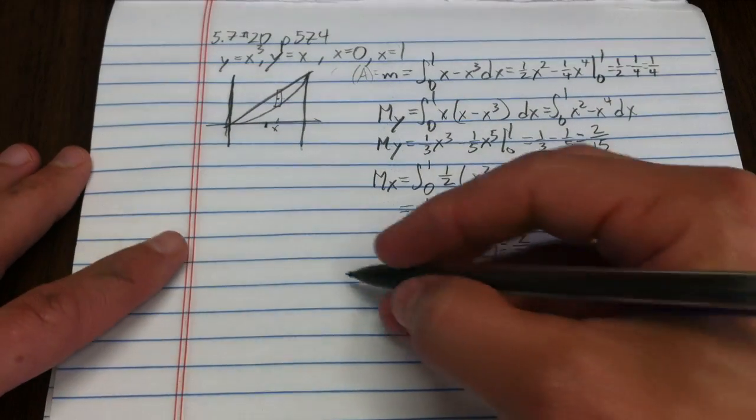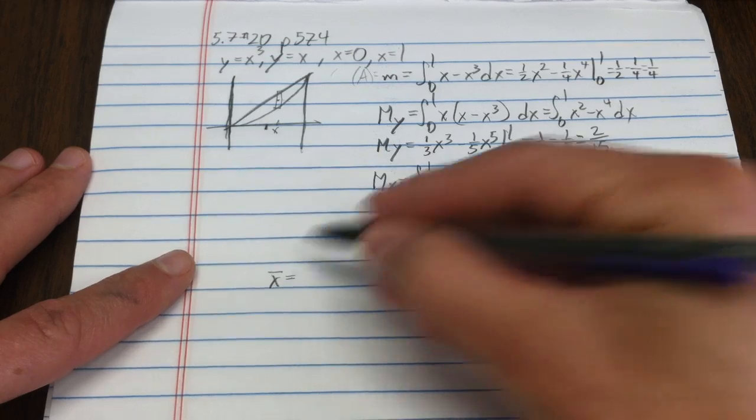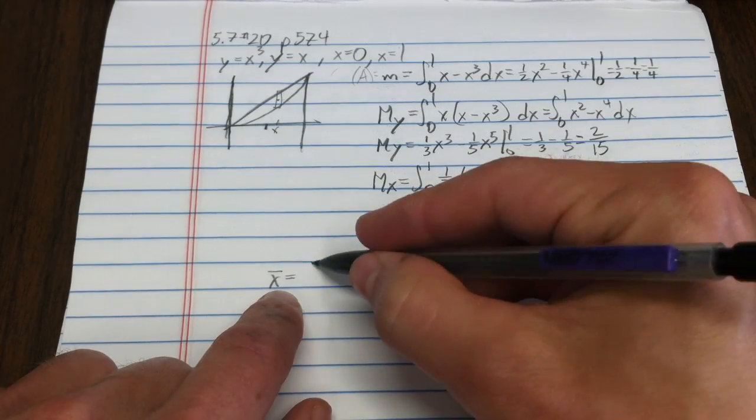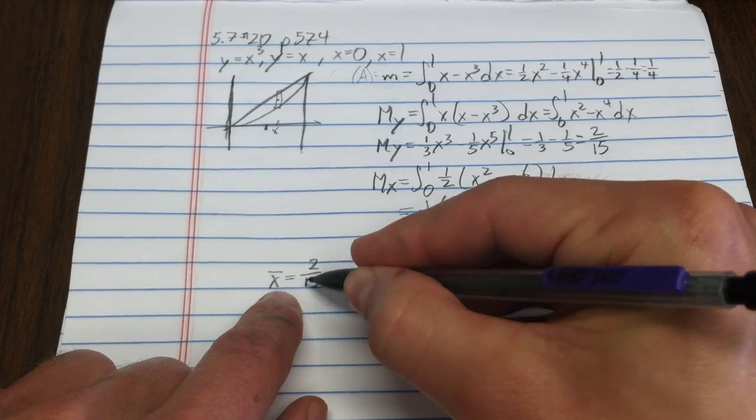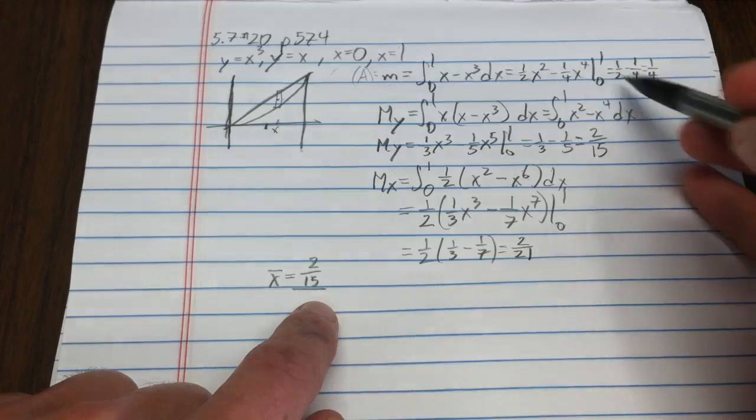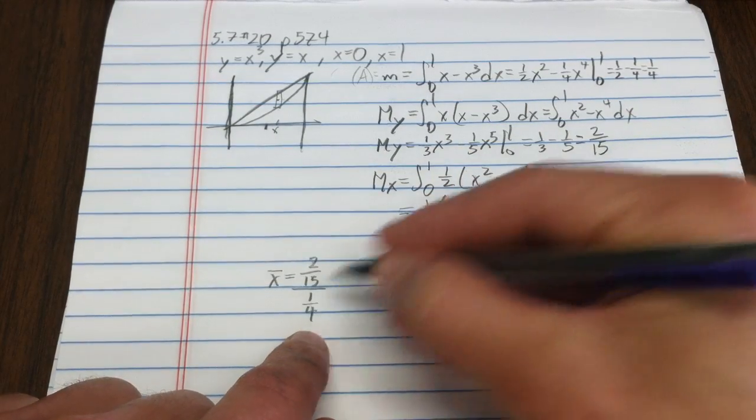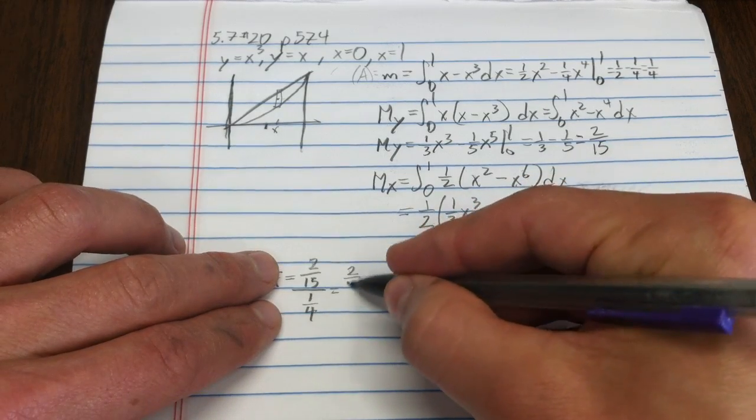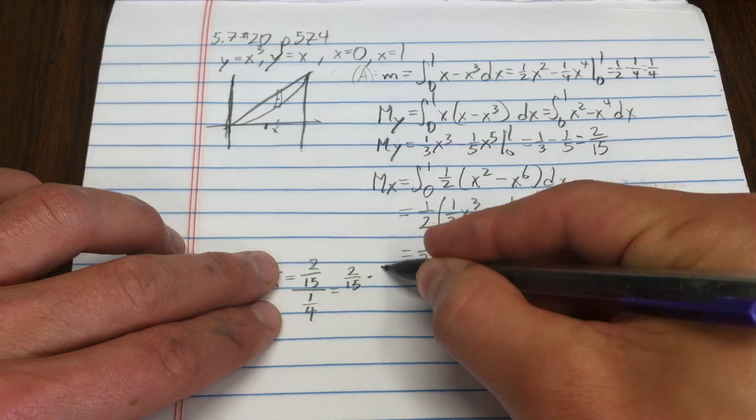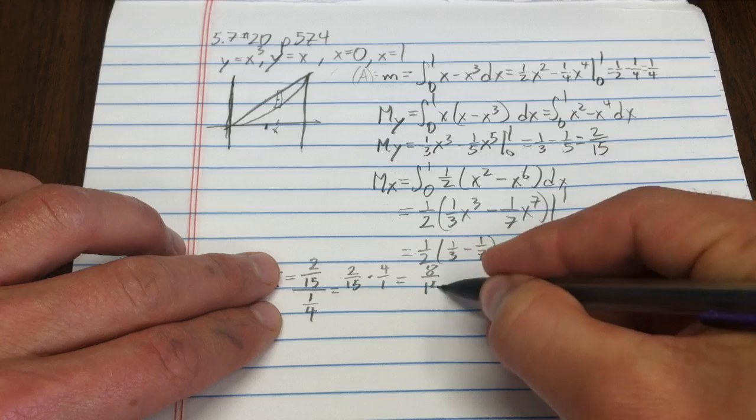Now I'm ready for the centroid. We have x-bar, which is the moment around the y-axis. That's two-fifteenths divided by the mass or the area, one-fourth. Dividing fractions is the same as inverting and multiplying, so times four over one, which gives me eight-fifteenths.